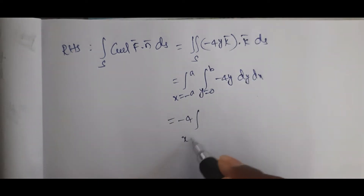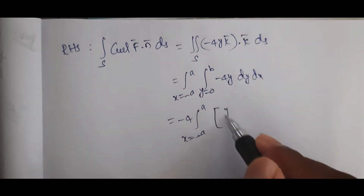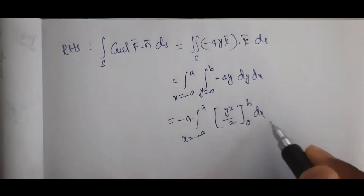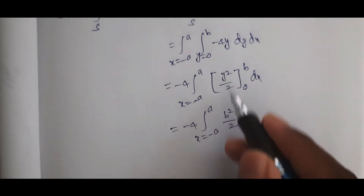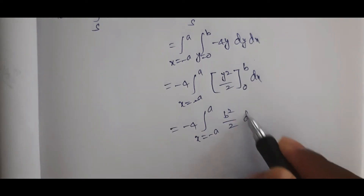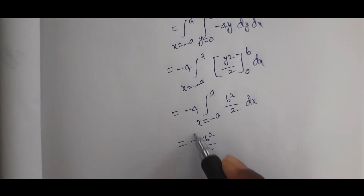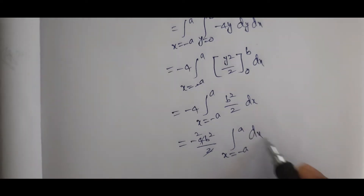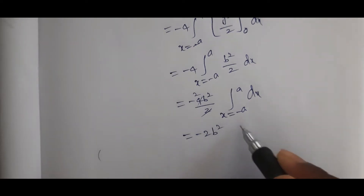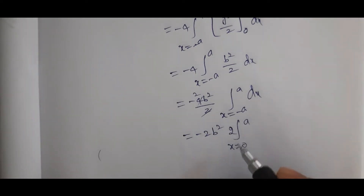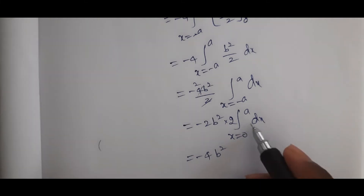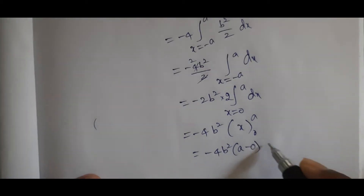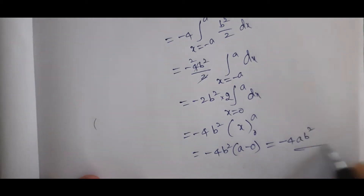Evaluating: −4 ∫_{−a}^{a} [y²/2]_0^b dx = −4 ∫_{−a}^{a} (b²/2) dx = −2b² · [x]_{−a}^{a} = −2b² · 2a = −4ab². This is equation number 1 (RHS result).